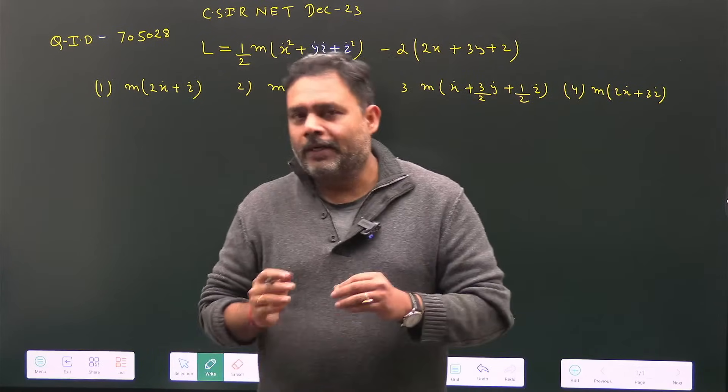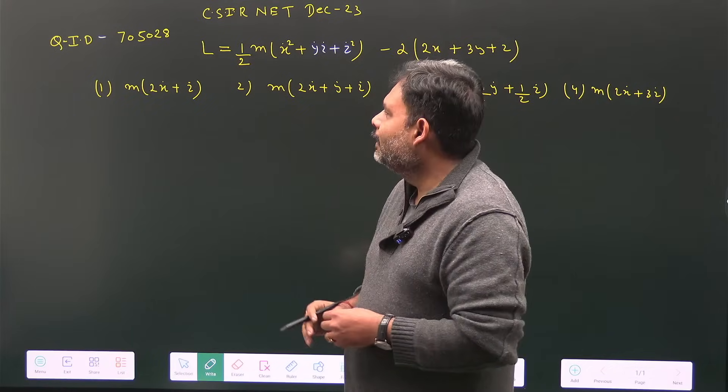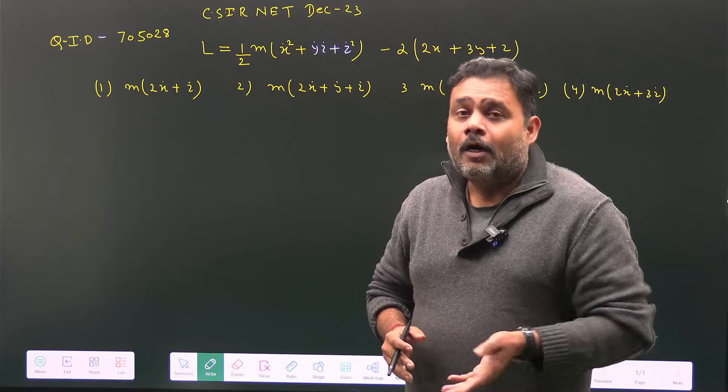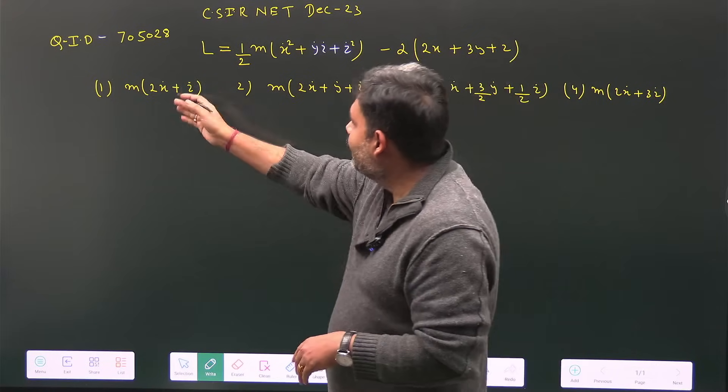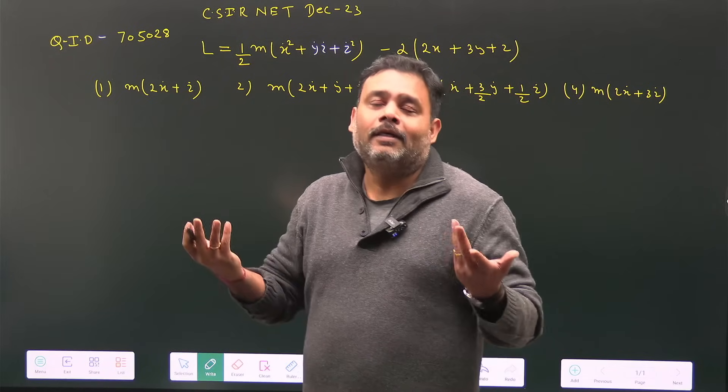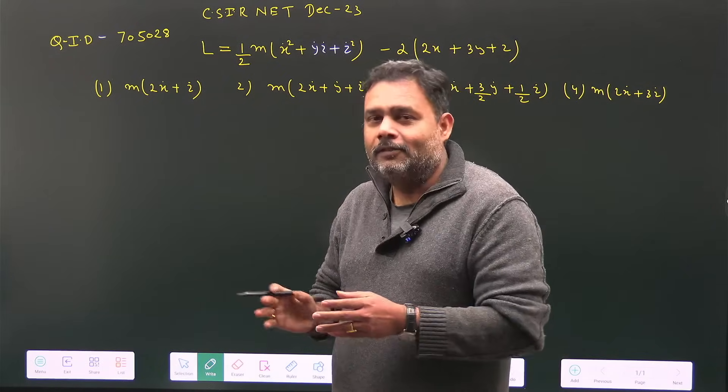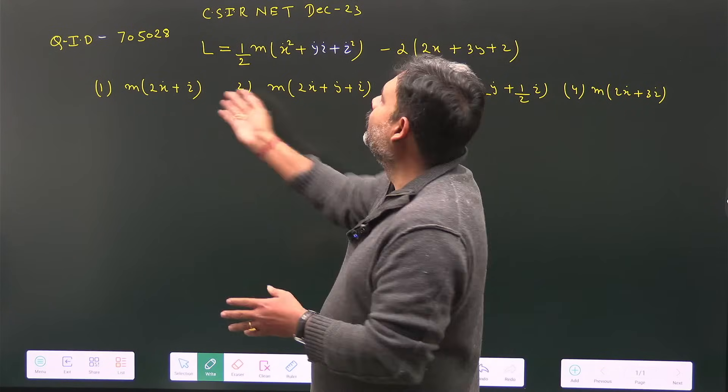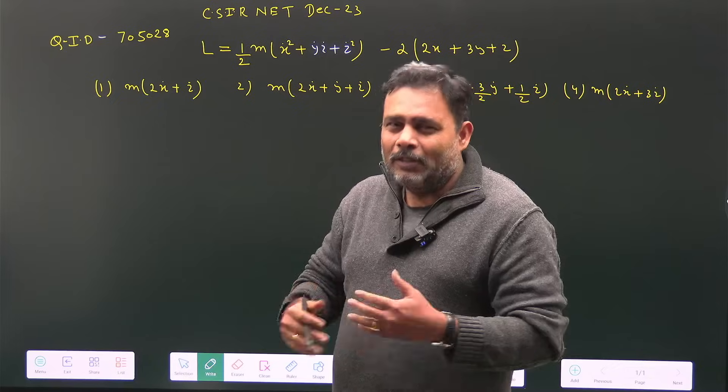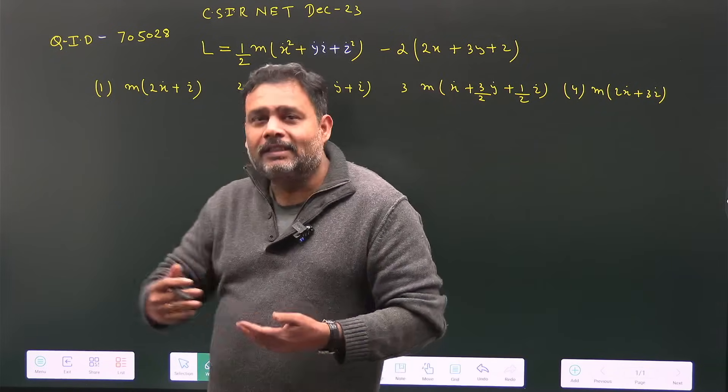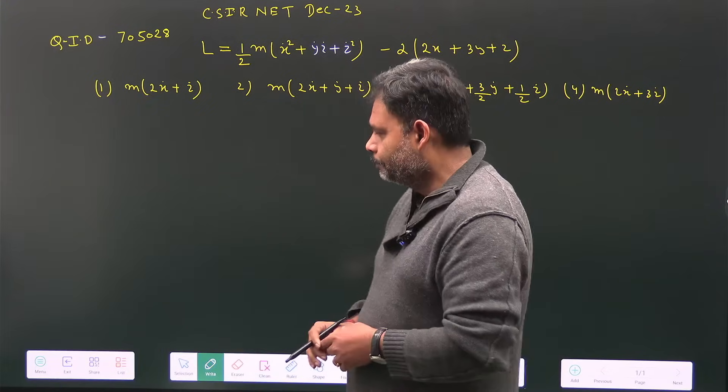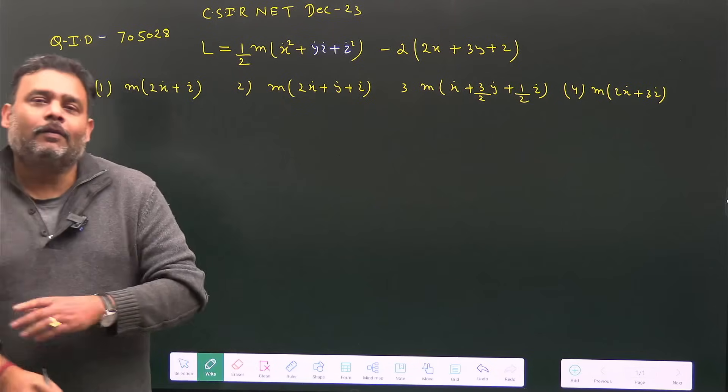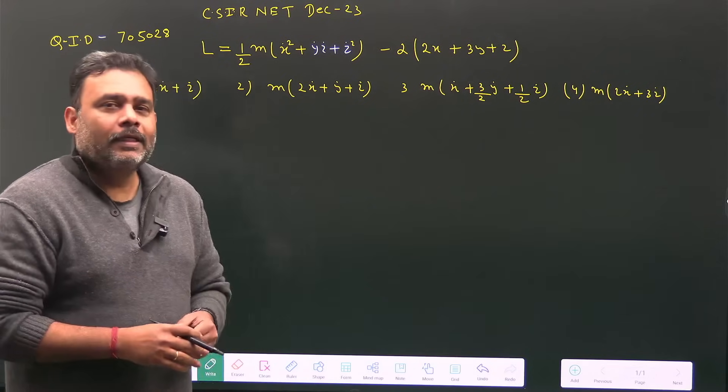Second, we could use Poisson bracket method. For that we'd need to convert the Lagrangian to Hamiltonian and then check for first order time derivatives. But this will be very lengthy, and in an objective exam, lengthy calculations are not favorable.